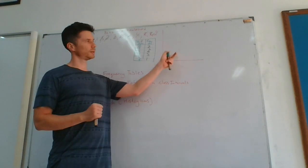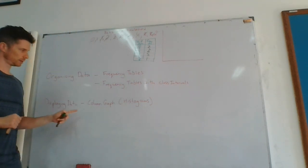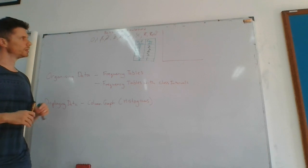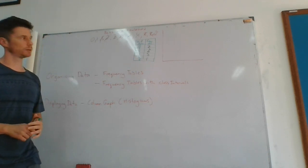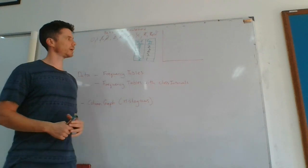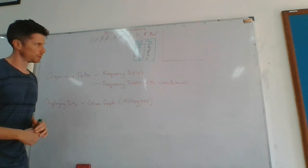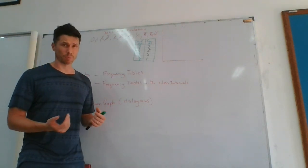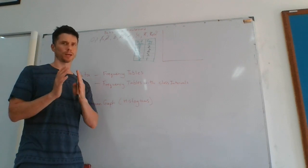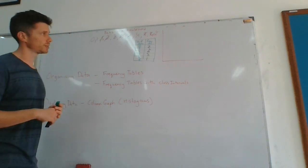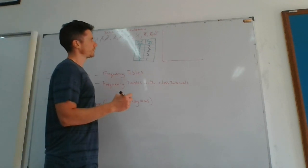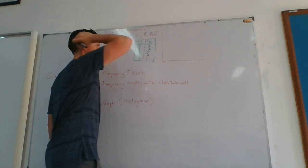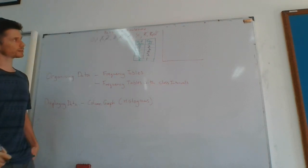So I want to display this frequency table data on a histogram. So histogram, a bit like a bar chart, just the columns are kind of stuck together, which is a bit different. Okay, so I need to figure out which goes on the x-axis and which should go on the y-axis.